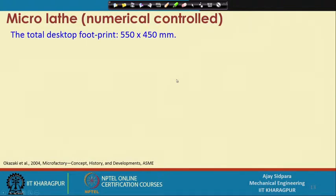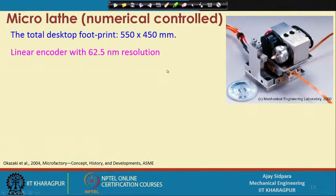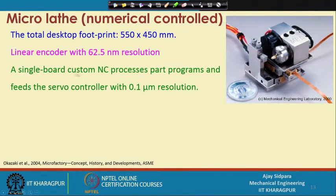The second version of that machine is a numerically controlled machine using a standard NC program. It has a footprint of 550 by 450 millimeter, and linear encoders with a resolution of 62.5 nanometer are used. The encoder resolution should be at least 10 times higher than the machine resolution to extract maximum benefit. It has a single-board custom numerical control that processes part programs in the servo control field with a 0.1 micron resolution.